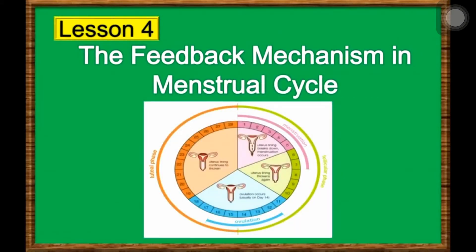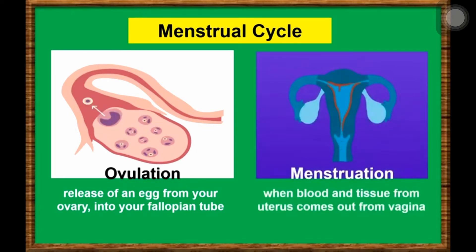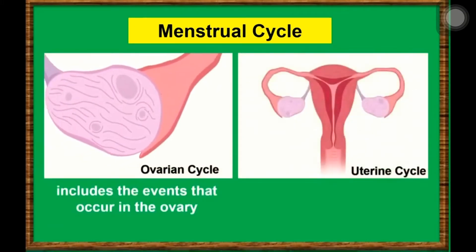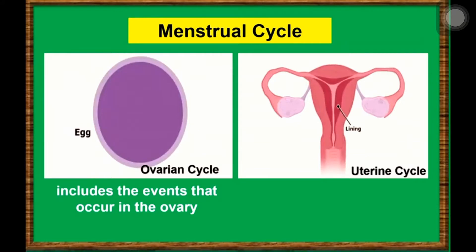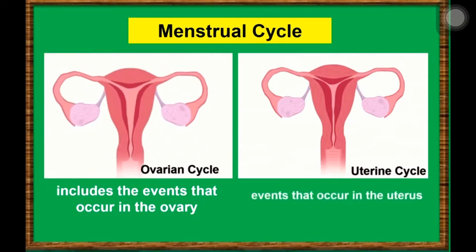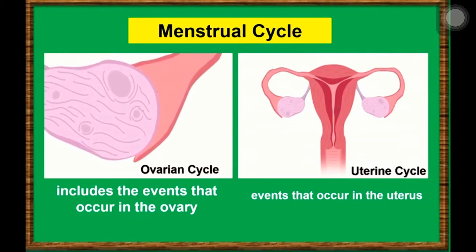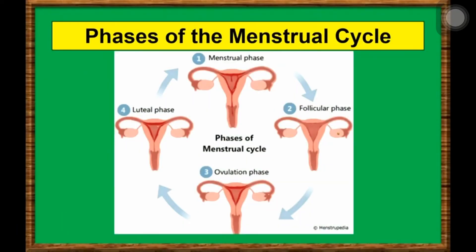The Feedback Mechanism and Menstrual Cycle. Ovulation is part of the menstrual cycle which occurs each month in a sexually mature female. Another part of the menstrual cycle is menstruation. Menstruation is the process by which blood and other tissues are shed from the uterus and leave the body through the vagina. The menstrual cycle can be divided into two cycles called the ovarian cycle and the uterine cycle. The ovarian cycle includes events that occur in the ovary like ovulation, while the uterine cycle refers to events that occur in the uterus like menstruation. The two cycles are closely related, so they are described together and referred to as the menstrual cycle.